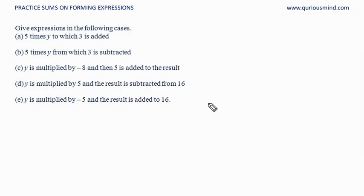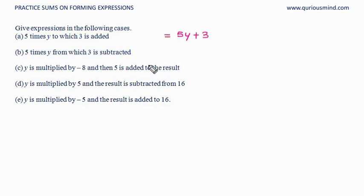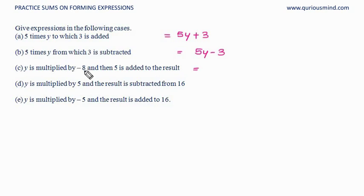Give expressions for the following cases. 5 times y to which 3 is added: multiplication is not shown explicitly, giving 5y, and then 3 is added, so it is 5y + 3. 5 times y from which 3 is subtracted: 5y − 3. y multiplied by −8 and then 5 added to the result: y × −8 gives −8y, and adding 5 gives −8y + 5.